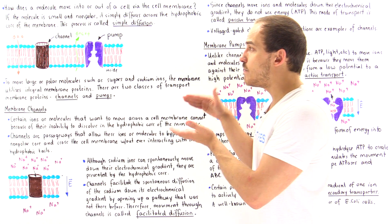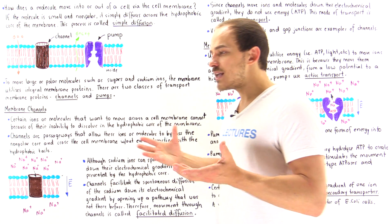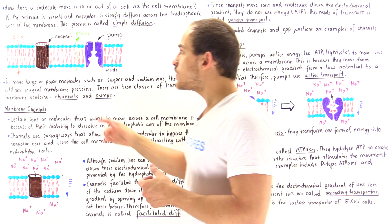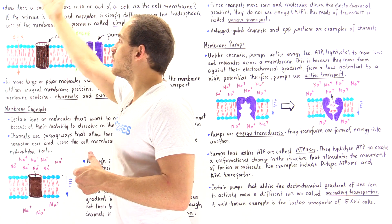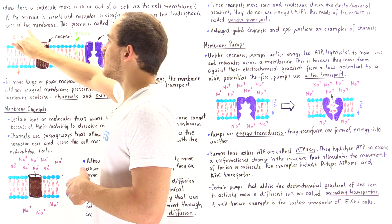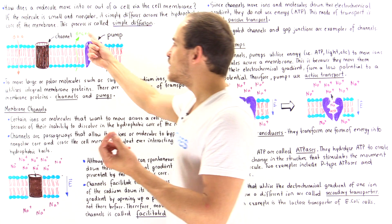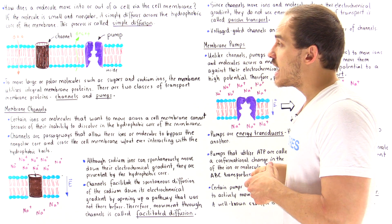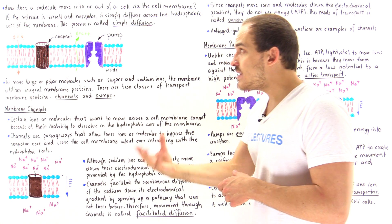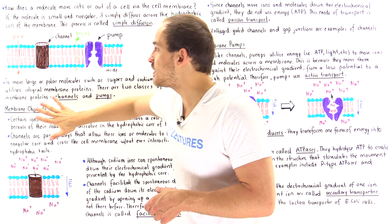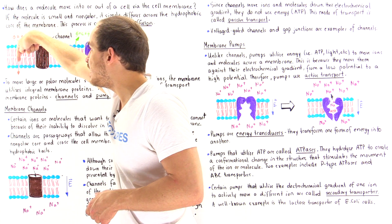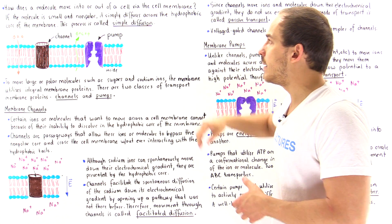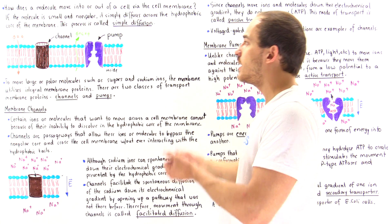To demonstrate this, let's examine the cell membrane of cells found inside our lungs. Inside those cells, we have a high concentration of carbon dioxide and a low concentration on the outside. Conversely, we have a low concentration of oxygen on the inside but a high concentration on the outside. Both carbon dioxide and oxygen are small non-polar molecules, so they have no problem dissolving into the hydrophobic red core of the membrane. Oxygen molecules will spontaneously move from a high concentration to a low concentration — from the outside to the inside — while carbon dioxide moves from the inside to the outside down its concentration gradient, both via simple diffusion.